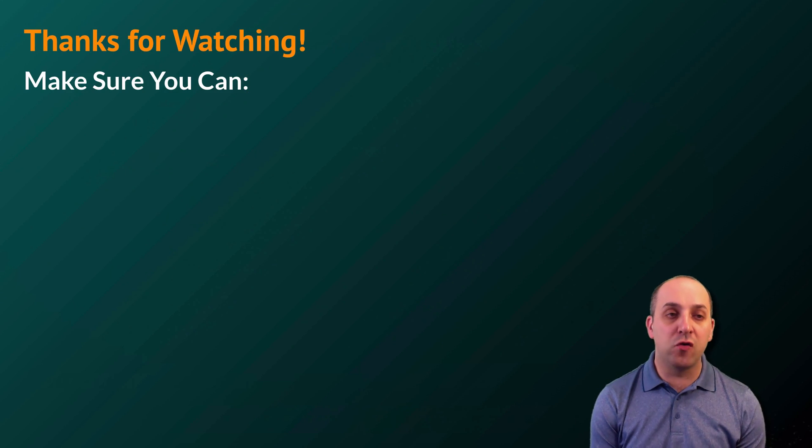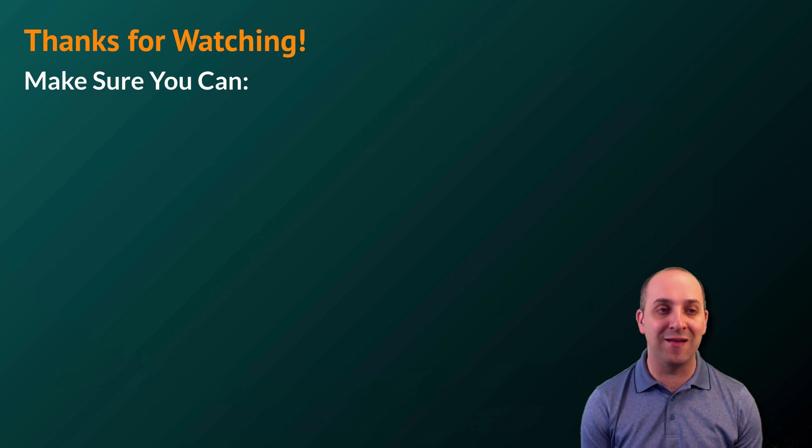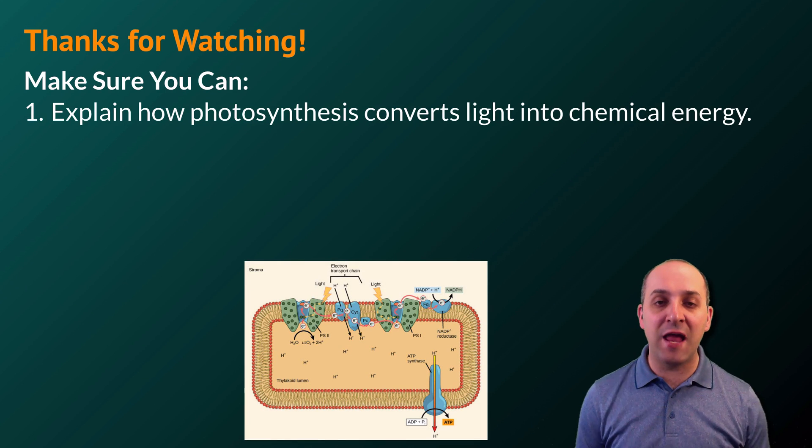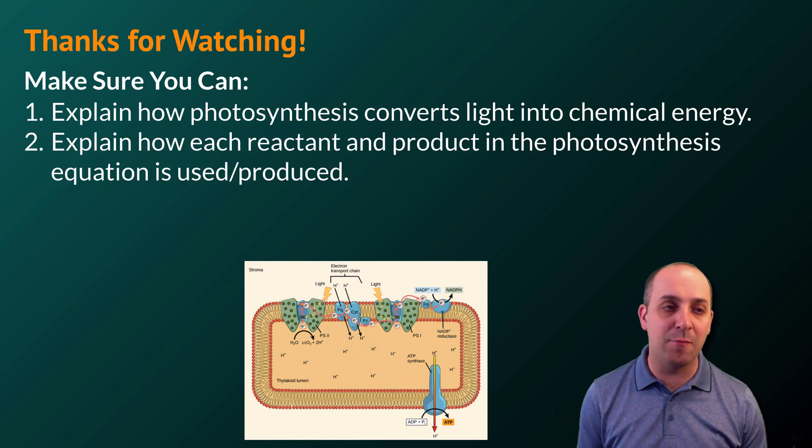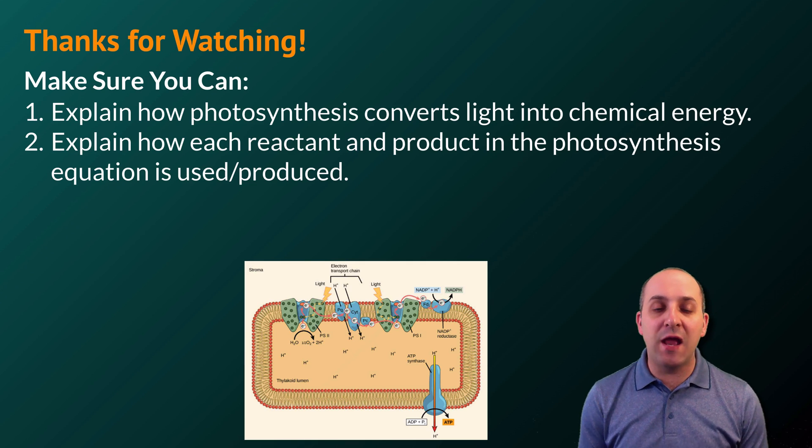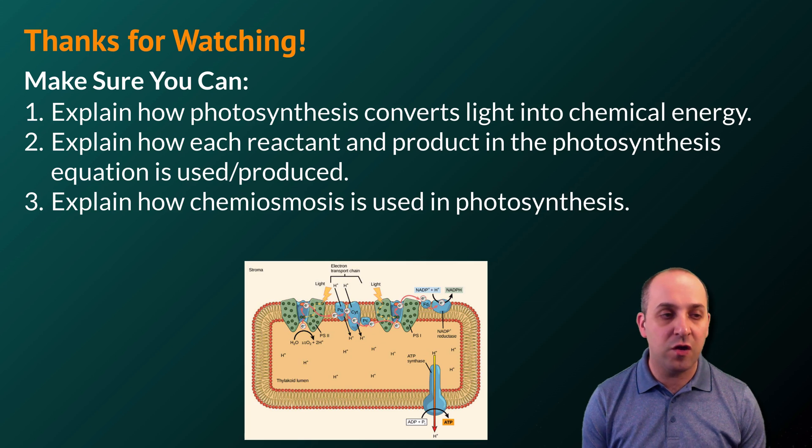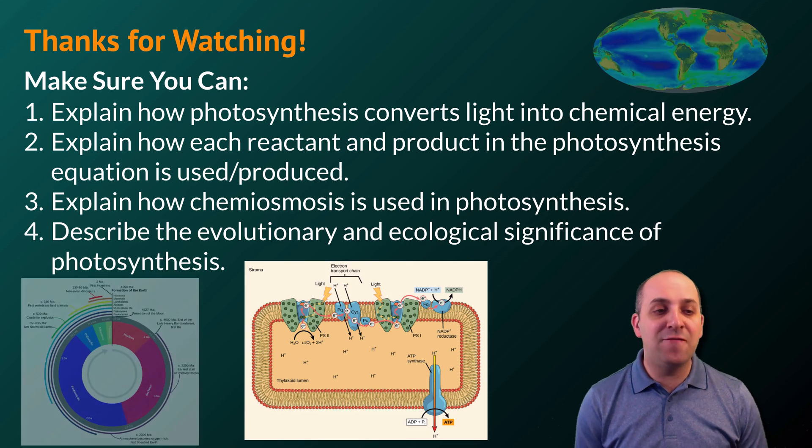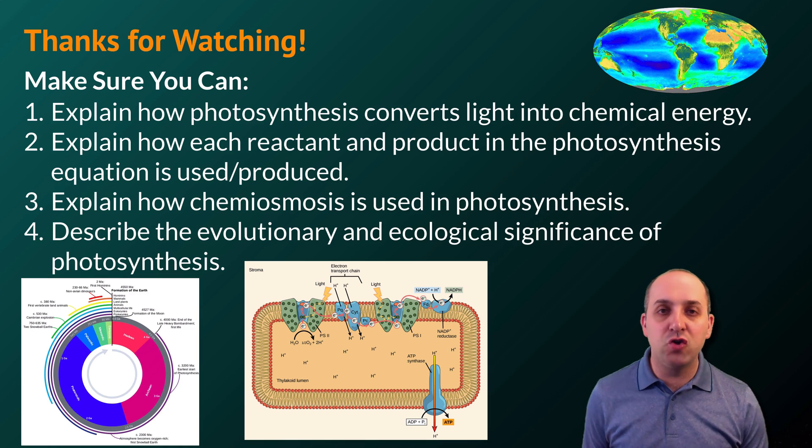Thanks so much for watching our discussion of photosynthesis. Make sure you can do the following things here at the end. Make sure you can explain how photosynthesis converts light into chemical energy. Make sure you can explain how each reactant and product in photosynthesis equation is used and produced. Make sure you can explain how chemiosmosis is used in photosynthesis. And finally, make sure that you can describe the evolutionary and ecological significance of photosynthesis.